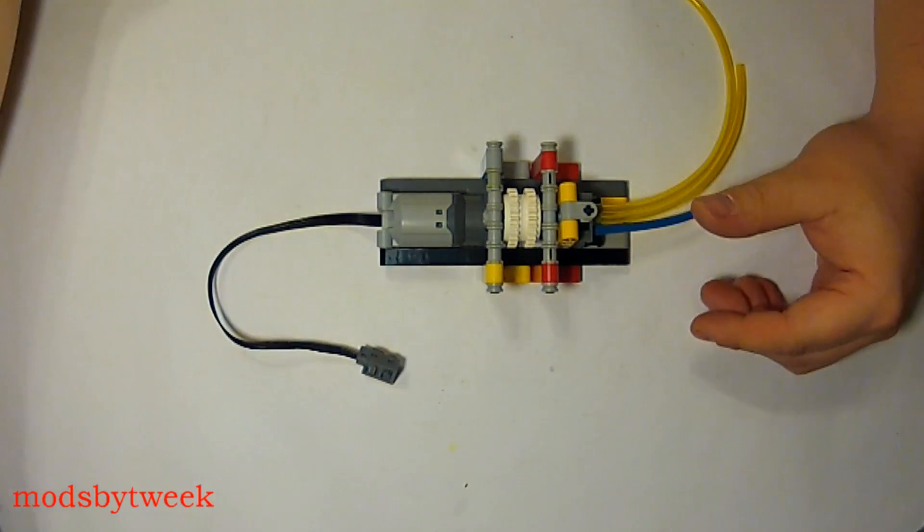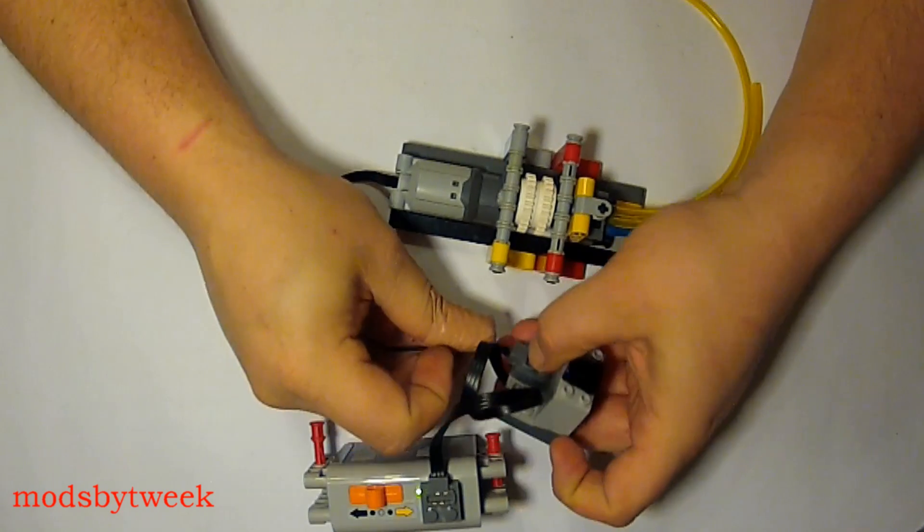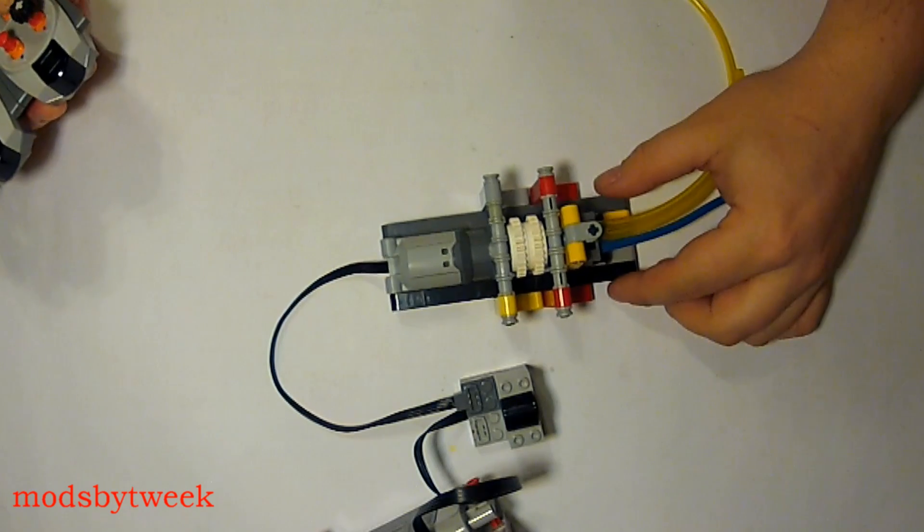And then from here, we're going to take a battery box. Turn some power on. Set it to blue. Channel one. Channel one. Then from here, you can just use your remote control.